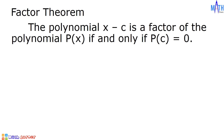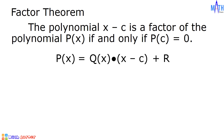Let us use the division algorithm. p of x is equal to q of x times the quantity x minus c, plus r, where p of x is the dividend, q of x is the quotient, x minus c is the divisor, and r is the remainder.